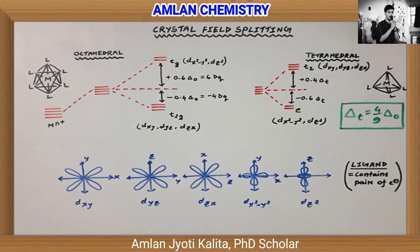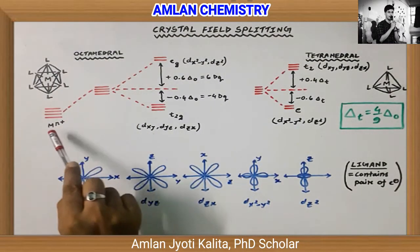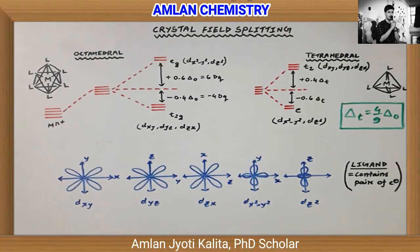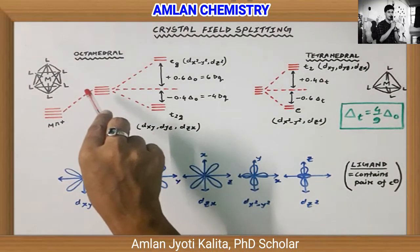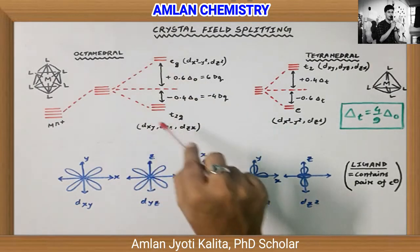First, we'll see the octahedral complex. This is a schematic representation: Mn+ represents the metal ion with oxidation number n. For example, Cr2+, Cr3+, Fe2+, or Fe3+, depending upon the complex. When these ligands approach the five d-orbitals, the orbital energies rise and split into two sets.